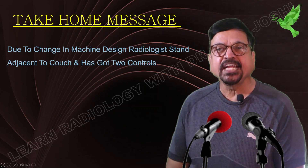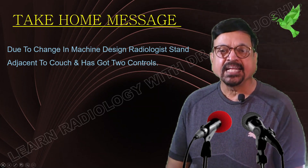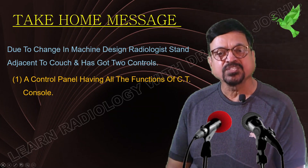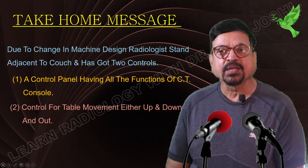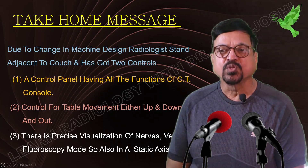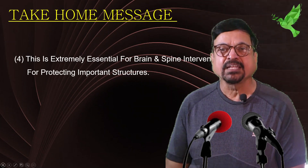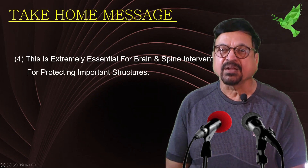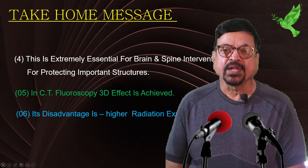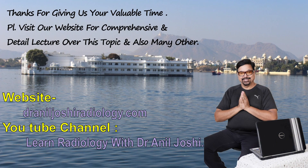The take-home message: due to changes in machine design, the radiologist is adjacent to the couch and has two controls — one is a console and the second is for maneuvering the table up, down, and in and out. There is precise visualization of needle and vessels in both fluoroscopy mode and static axial mode. This is extremely essential for brain and spine localization because vital structures surround the target and must be protected. In CT fluoroscopy, since we achieve a 3D effect, we must be oriented to 3D visualization. The main disadvantage is long radiation exposure, but with proper care this can be managed.